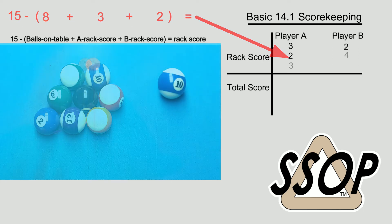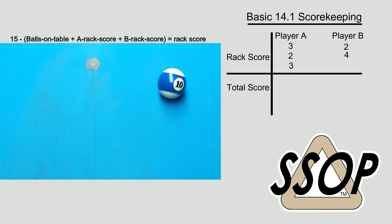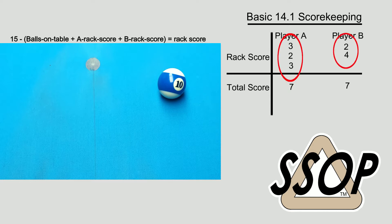When the rack is over, 14 balls have been pocketed, the total of both players' rack scores will equal 14. It is here at the end of each rack that the count totals 14 instead of 15 because one ball remains on the table to break the next rack. The only other point to keep in mind is that fouls are subtracted from your total score, never from the rack score.